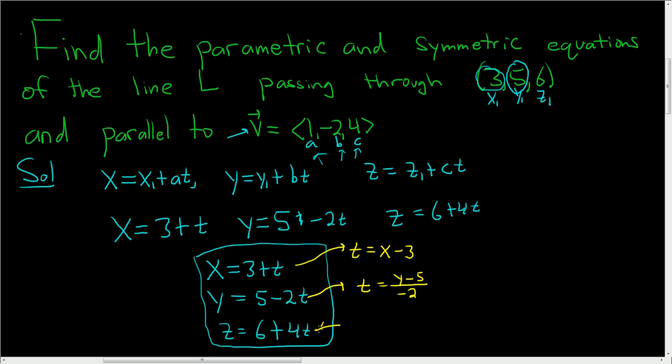And if we solve this for t, we get t equals z minus 6, then we would divide by 4. And so these are the symmetric equations, and they're all equal. x minus 3, well, all of these are t, so all of these are equal.